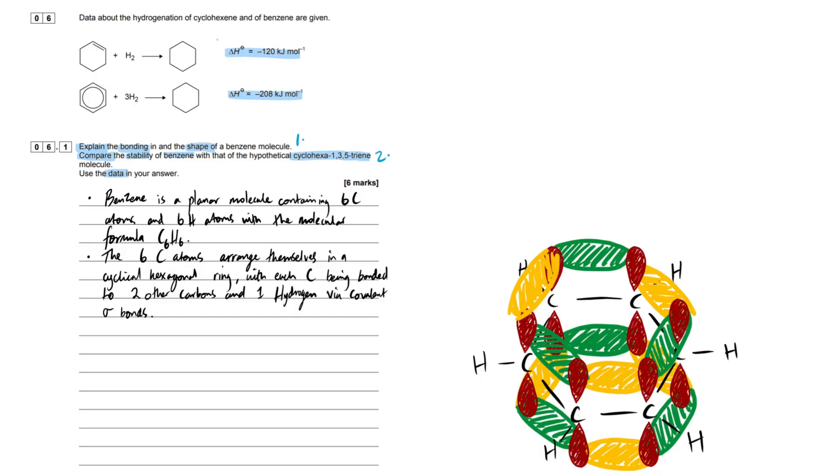I've written my first bullet points. Remember, level of response, bullet points are completely fine. Benzene is a planar molecule containing six carbon atoms and six hydrogen atoms with the molecular formula C6H6. The six carbon atoms arrange themselves in a cyclical hexagonal ring with each carbon bonded to two other carbons and one hydrogen via covalent sigma bonds.